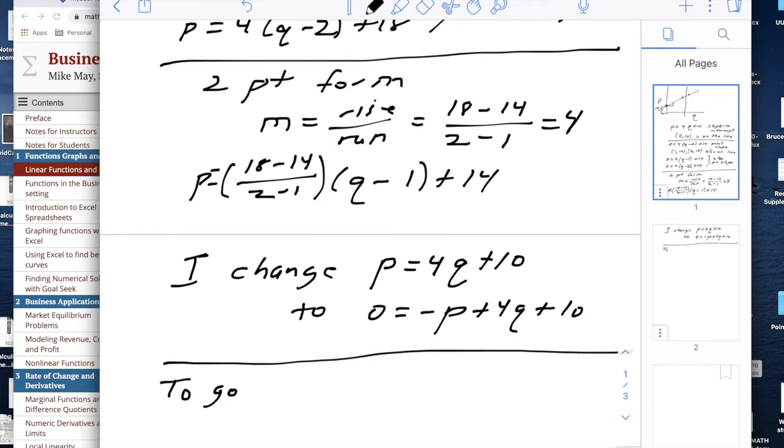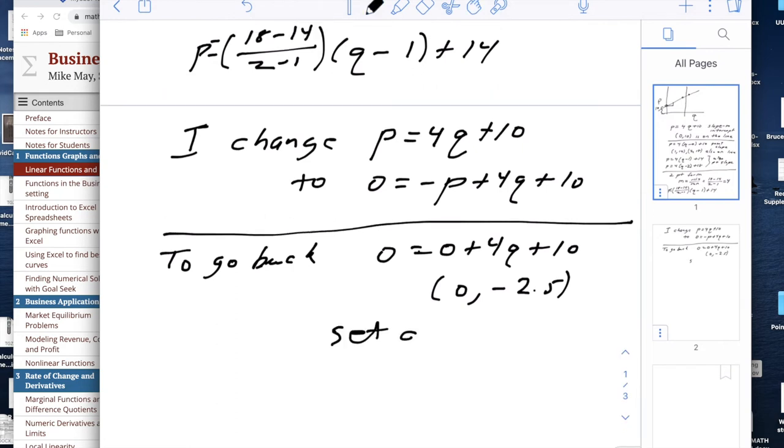To go back, I first want to point with Q equal to 0 and so I'll get 0 equals 0 plus 4Q plus 10, so (0, minus 2.5) is a point. And then I look at set Q equal to 0 and I have 0 equals minus P plus 10, and so (10, 0) is a point. And now I have two points for the two-point formula or I can work out a slope and do point slope or slope intercept, but this gave me my two intercepts.